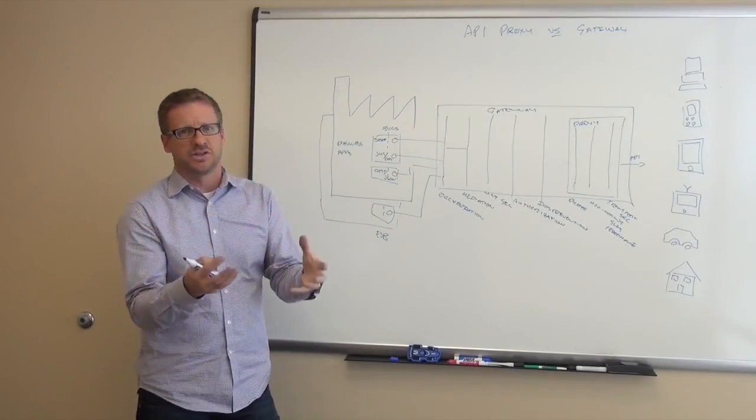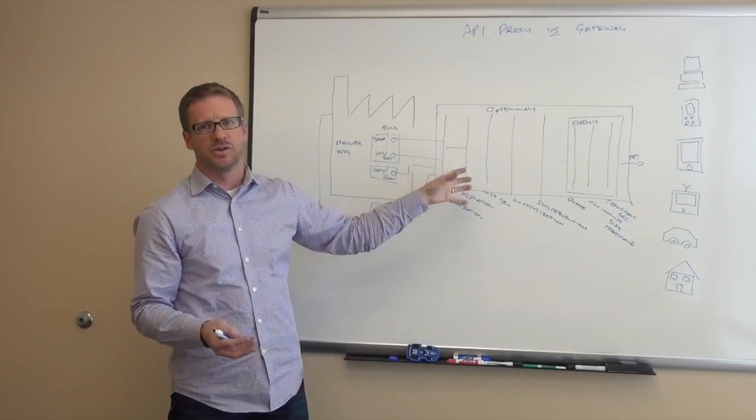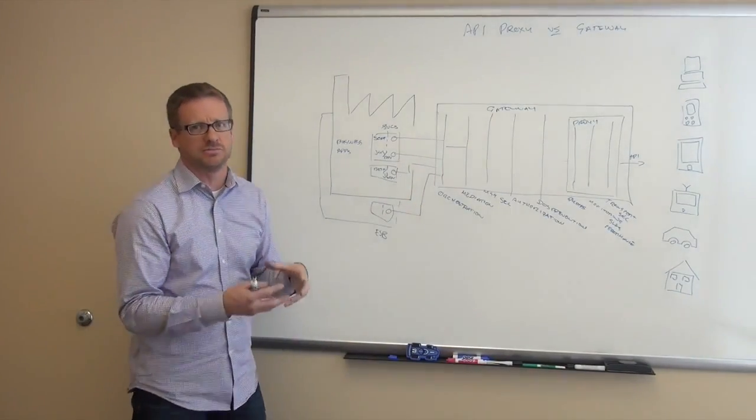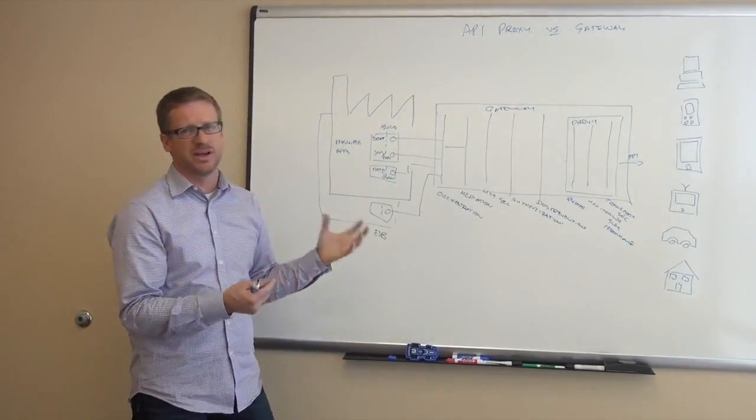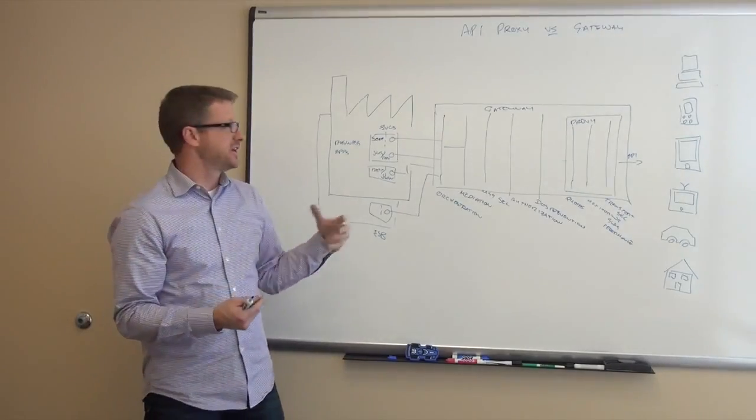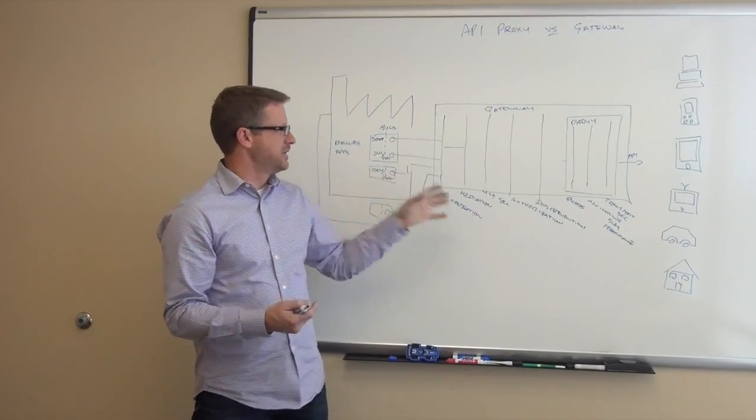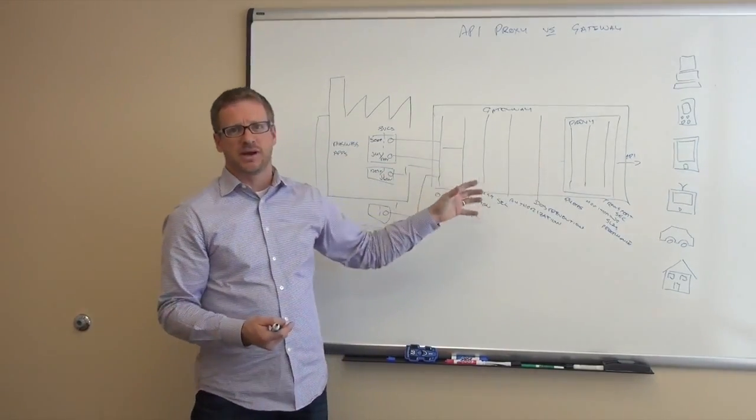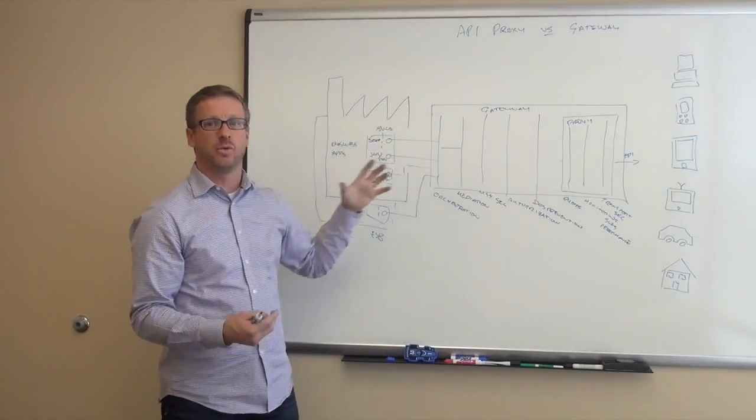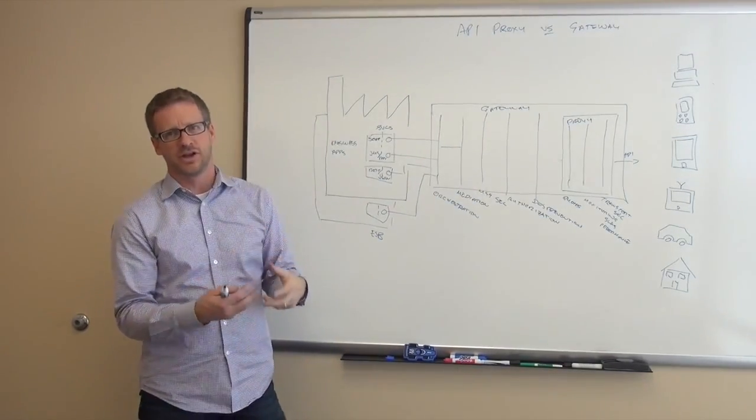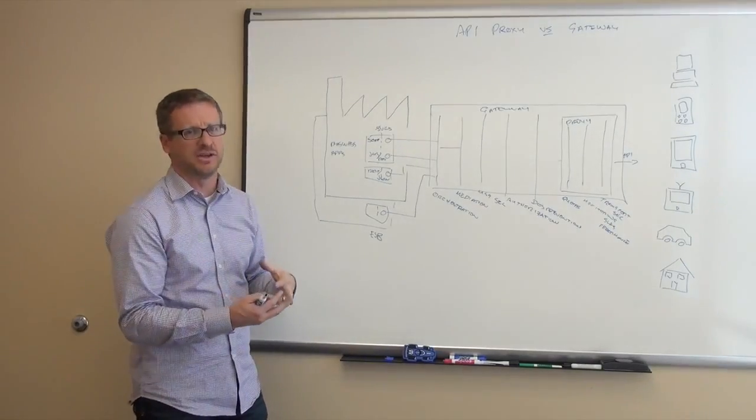And what you'll be told is that proxies are faster. The gateways slow things down, add cost, add weight to your process. That's really not true. A well-architected, well-designed gateway is going to act as a proxy when it needs to act as a proxy. It will only add these extra capabilities when required. It's driven by configuration. It should be all declarative based on the need.